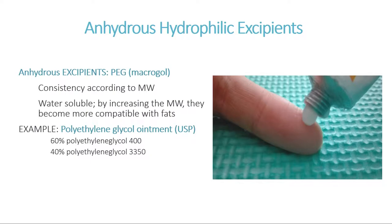The anhydrous hydrophilic excipients are formulations normally prepared by combination of polyethylene glycols of different molecular weights, also called macrogols. Their consistency depends on the molecular weight, so they are normally followed by a number indicating it. Those of low molecular weight are much more liquid, while those of higher molecular weight are much more solid and become more compatible with fats, even though they are water soluble.